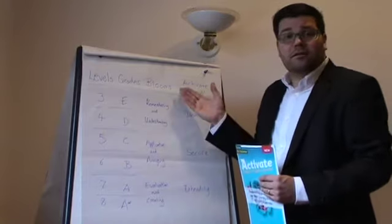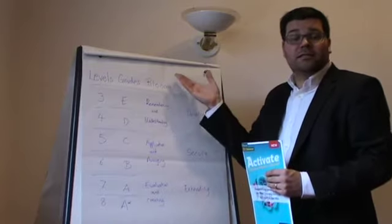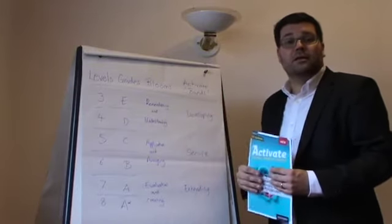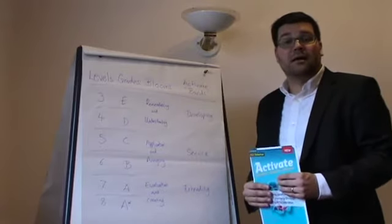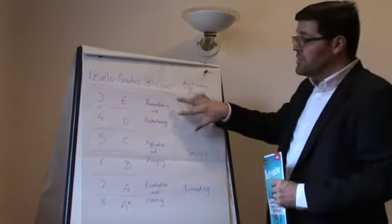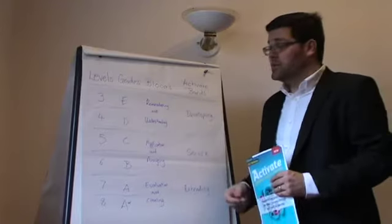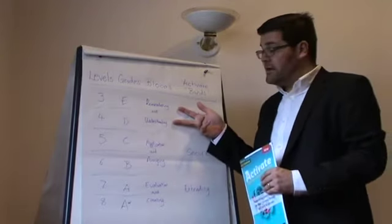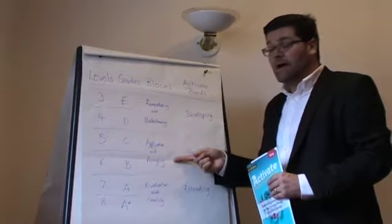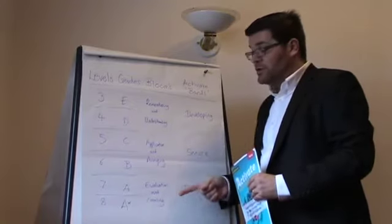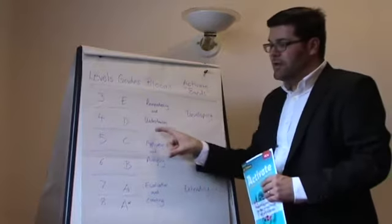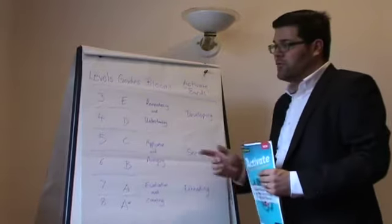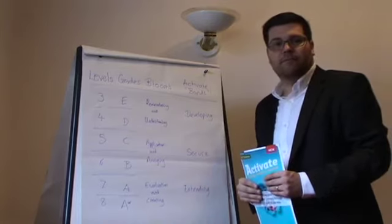Something that's been around since 1956 is Bloom's Taxonomy. It's been recently updated, but what remains the same in a lot of exam systems around the world is these three main divisions: remembering and understanding, application and analysing, and evaluation and creating. These three bands roughly equate to those levels and grades you can see here.